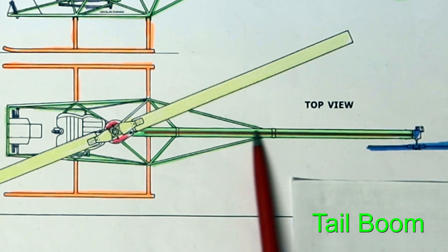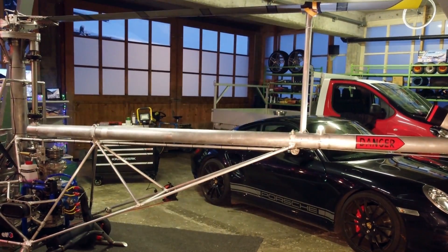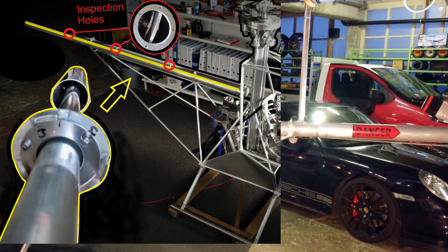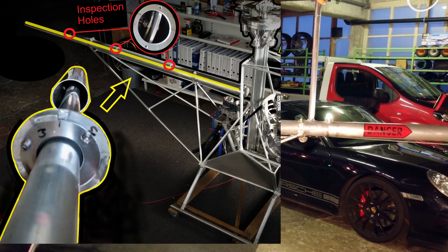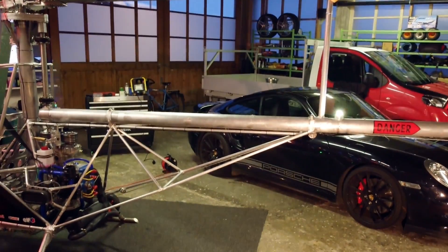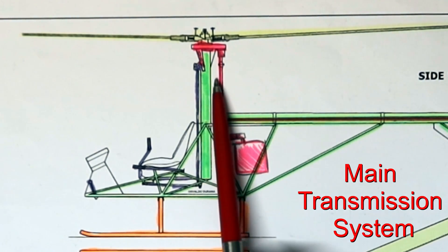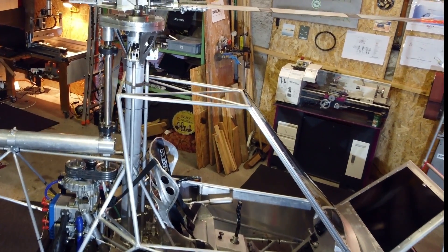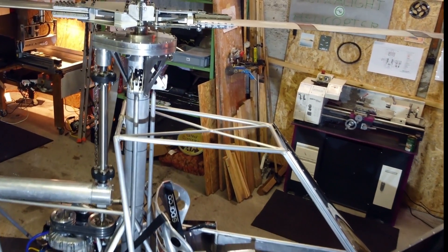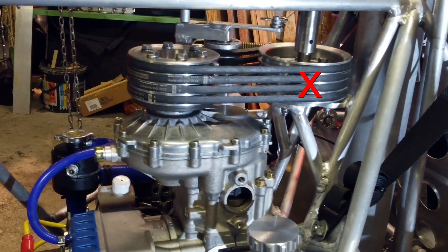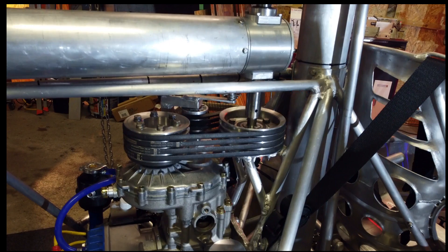The tail boom. This is the tail boom with the integrated transmission shaft which connects the central gearbox with the tail rotor gearbox. Then we've got the main transmission system. The power of the engine is translated through the engine pulley and freewheel pulley up to the central gearbox.